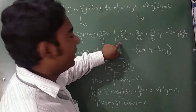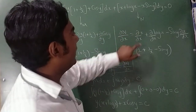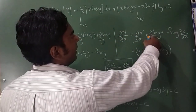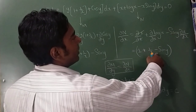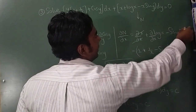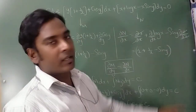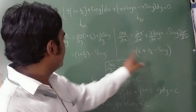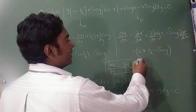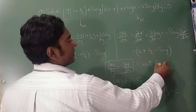Differentiating N with respect to x: dx/dx = 1, d/dx of log x = 1/x, and differentiating -x sin y gives -sin y (dx/dx cancels). So ∂N/∂x = 1 + 1/x - sin y. Both equations are the same, so this is confirmed as an exact equation where ∂M/∂y = ∂N/∂x.